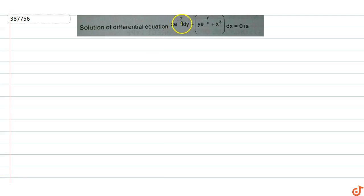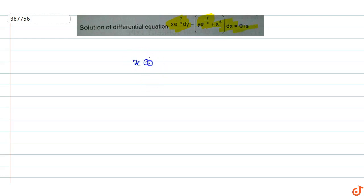In this question, we need to find the solution of the differential equation: x times e raised to power minus y by x, dy, minus y times e raised to power minus y by x, plus x cubed, dx equals zero. Rearranging: x·e^(-y/x) dy minus y·e^(-y/x) dx equals minus x cubed dx.